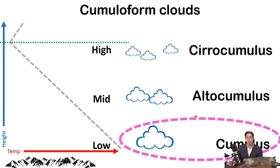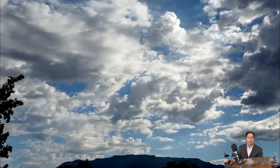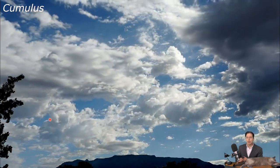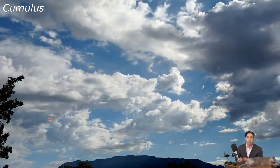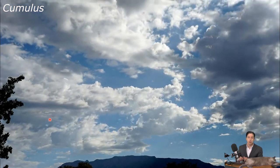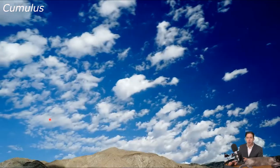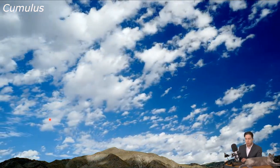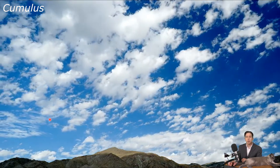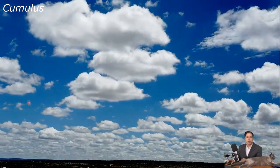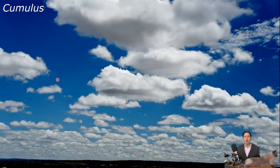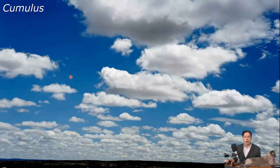Let's look at some cumulus clouds first. Cumulus clouds are probably the most common cloud you have seen. If you're lying on your back looking for shapes in the clouds, noticing they're slowly changing — those are usually cumulus clouds. I'm showing you some time-lapse photography here to illustrate that cumulus clouds are constantly changing, constantly either being born or dying.